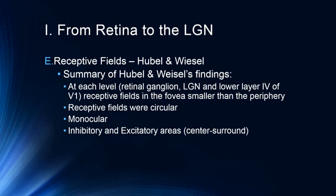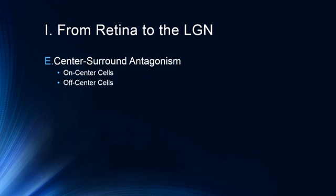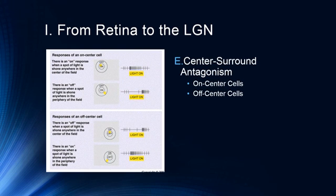This center-surround structure looks like a donut, called an annulus, where you have a center area and a surrounding area. When you shine a light in one area you get inhibition, and in the other you get excitation. There are inhibitory and excitatory areas in this center-surround, giving us on-center cells and off-center cells, which also means on-surround and off-surround.